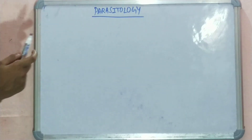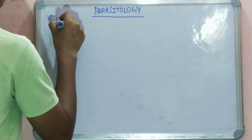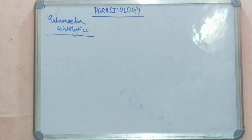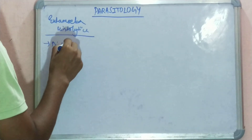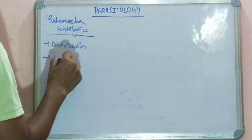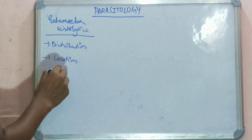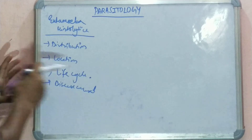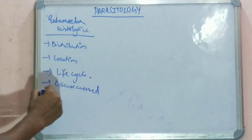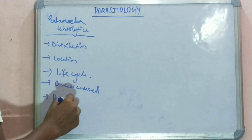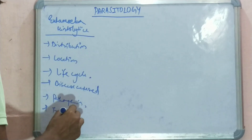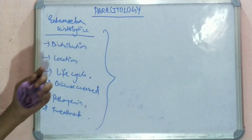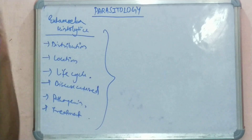Entamoeba histolytica, or E. histolytica, will be covered based on its distribution, location, life cycle, disease caused, pathogenesis, and treatment. These are the basic terms related to Entamoeba histolytica. That's it from this video on parasitology — keep following for more updates, thank you.